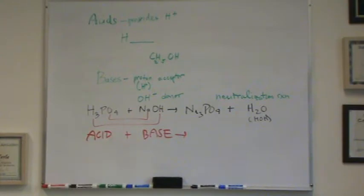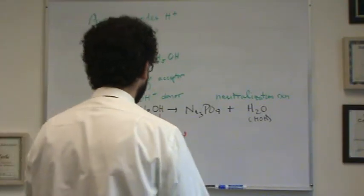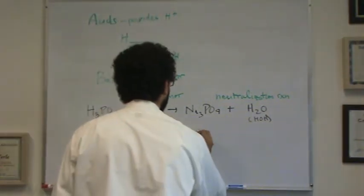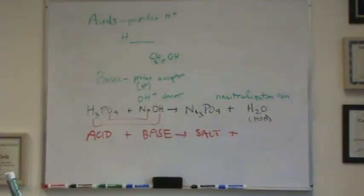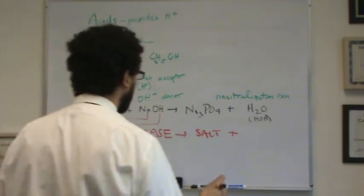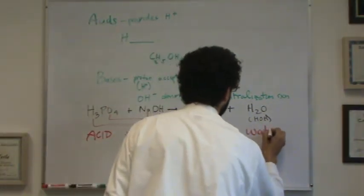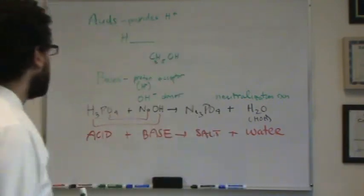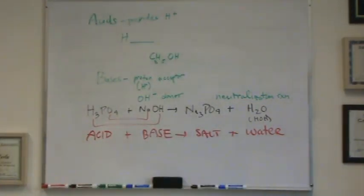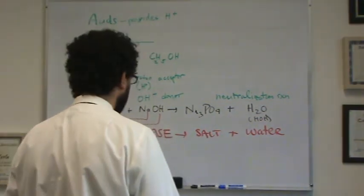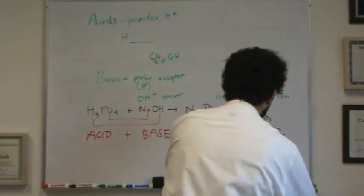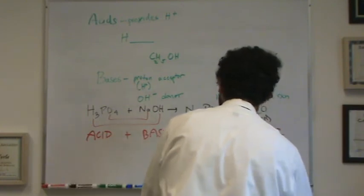OH is a big indicator that it's a base. It goes to an ionic compound. Remember, we call ionic compounds salt. So anything ionic is a salt. Ionic things have a metal in it, plus water. So acid plus base goes to salt plus water is a neutralization reaction. It is also a double replacement, but we're going to use the term neutralization when we're talking about acid and base.